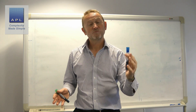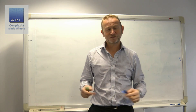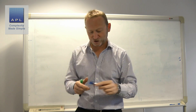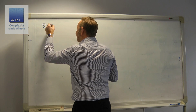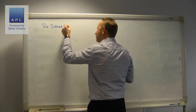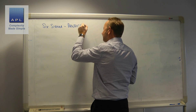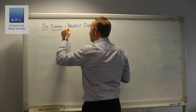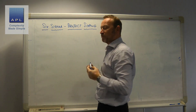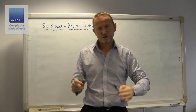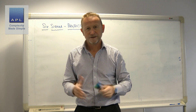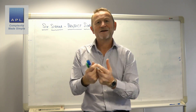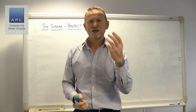Welcome to Complexity Made Simple. My name is Paul Allen, and the subject of today's video newsletter is Six Sigma project scoping. This is something I often see go wrong, mainly because we use the wrong type of scoping mechanism for the project that we're actually doing. We try to draw a box around the project and the box prevents the answer from being found.